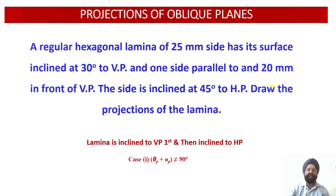An oblique plane is the one which is inclined to both the horizontal plane as well as the vertical plane. The problem statement is: an irregular hexagonal lamina of 25 mm side has its surface inclined at 30 degrees to the vertical plane, with one side parallel to and 20 mm in front of the vertical plane. That side is also inclined at an angle of 45 degrees to the horizontal plane. We are required to draw the projections of this lamina.